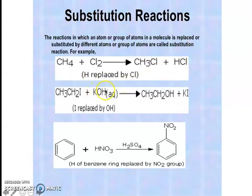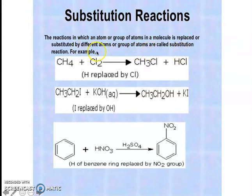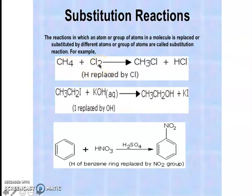The substitution reaction is the broad group of reactions we focus on in this syllabus. In substitution reactions, an atom or group of atoms in a molecule is replaced or substituted by a different atom or group of atoms. For example, when methane reacts with chlorine, the hydrogen of methane is substituted by a chlorine atom to give CH3Cl — the hydrogen is replaced by chlorine.